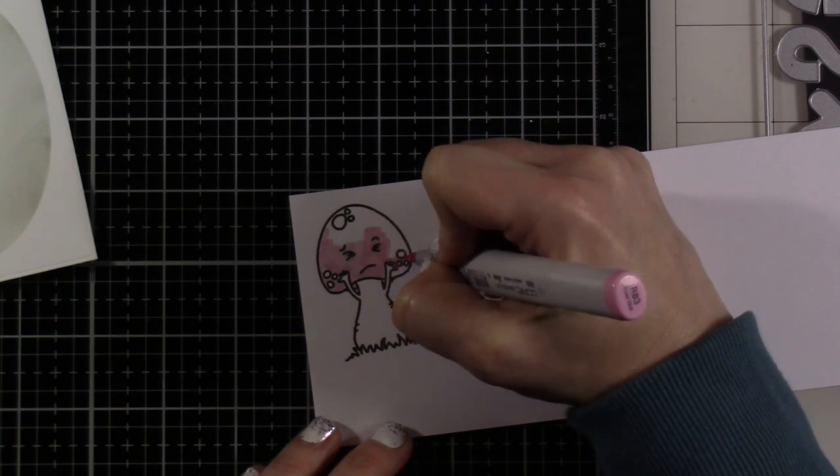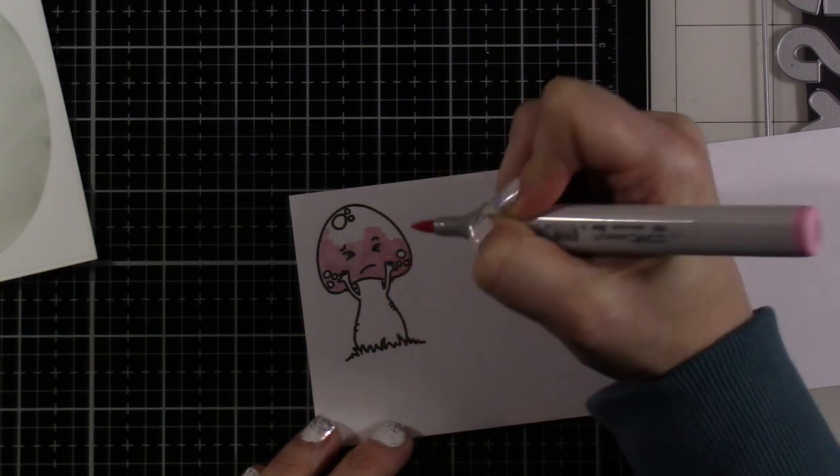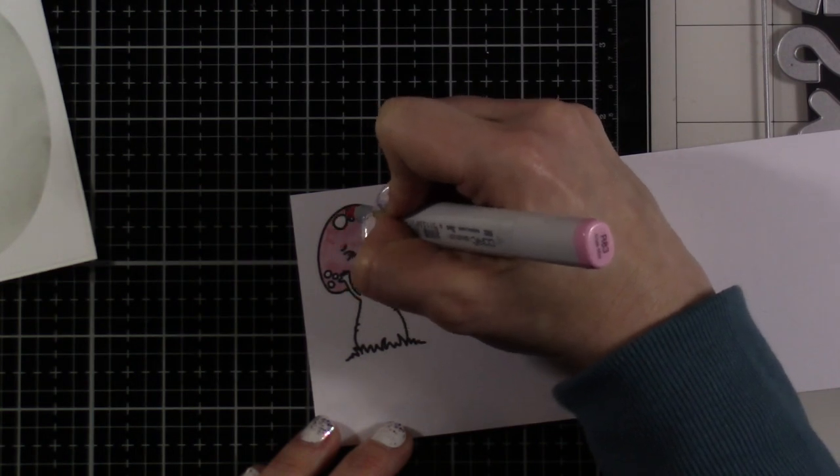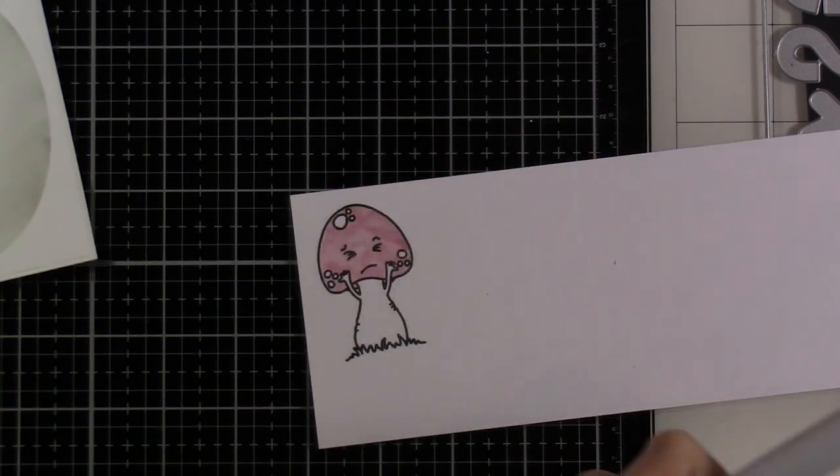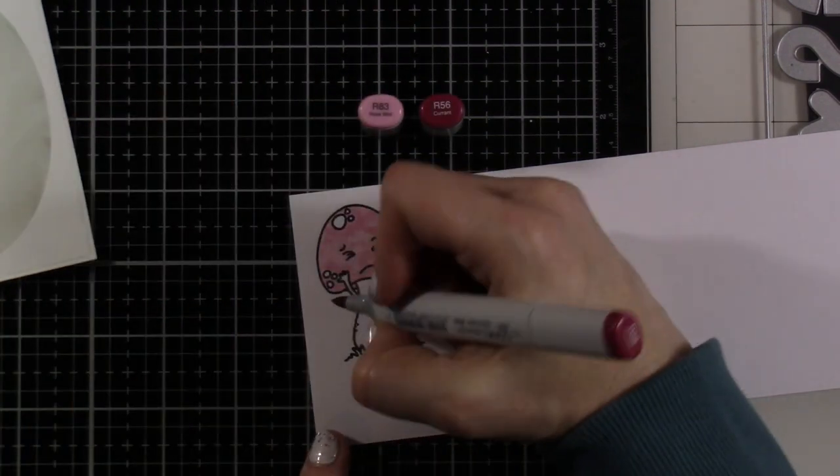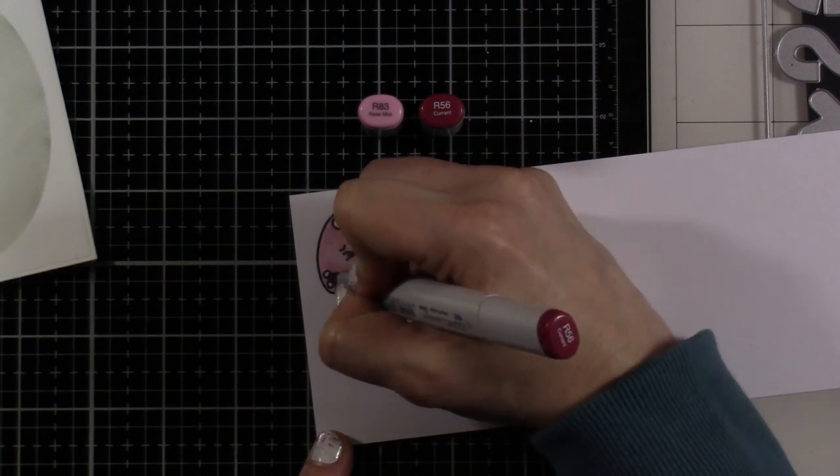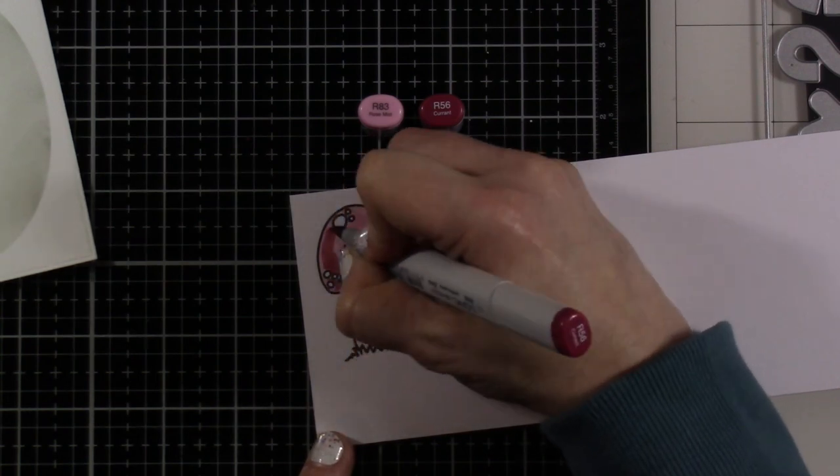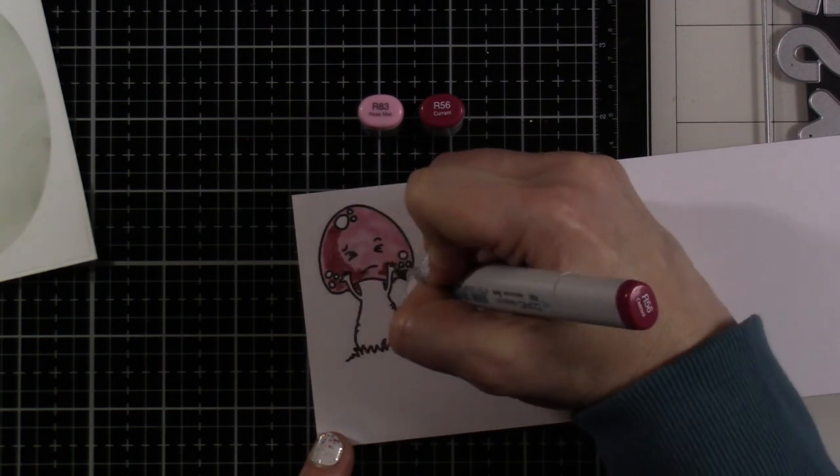We are doing some Copic coloring and I'm starting with my lightest color, which is an R83. I chose colors, I picked a color combo and went from there. So I went with more of a purpley red, like red-violet type colors. And so this next color is R56 and that is drastically different than the R83, as you can see.